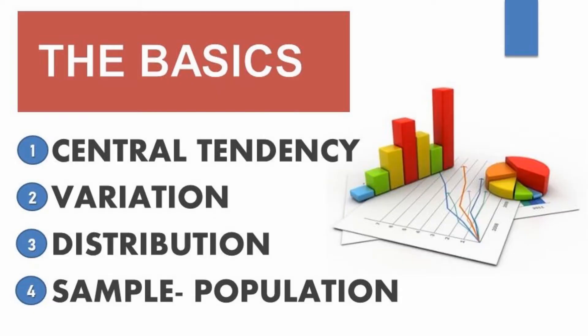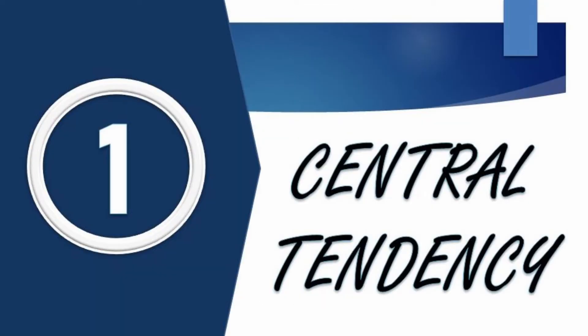We need to know four basic concepts when we are making a basic analysis of statistics. First is going to be central tendency, second is going to be variation, third is going to be distribution, and finally we are going to talk about sample and population. Let's start with number one: central tendency.